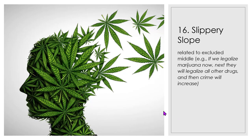You also have to be careful of the slippery slope, which is also related to excluded middle. For example: if we legalize marijuana now, then we'll legalize all other drugs and then crime will increase. This is an example of a slippery slope — that one thing is going to necessarily lead to another when there's really no data to show that.